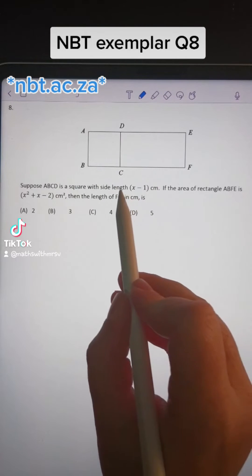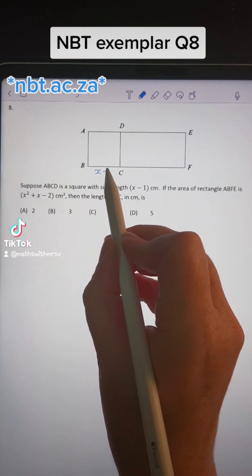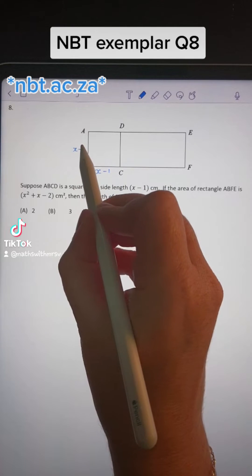A, B, C, D, with a length of x minus 1. That means that every length around it is x minus 1.